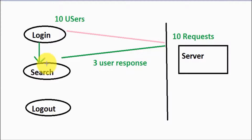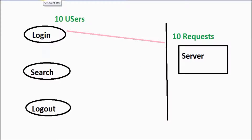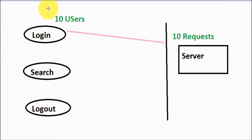All the users are taking their own time to log in, and after the login they are going to the search at different points in time. Now I want to implement a scenario in which all 10 users perform this search simultaneously — I want to hit the search functionality with 10 users concurrently. When we want multiple users to perform a task at the same point in time, we are going to use the Rendezvous point.